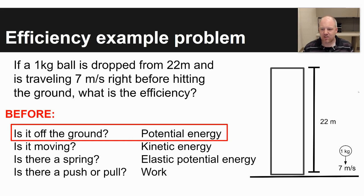So beforehand, the object is off the ground. It's 22 meters off the ground. And so in this scenario, you're beginning with potential energy. The ball is not moving. There's no spring. There's no push or pull to begin. And so you just have potential energy as your energy before.